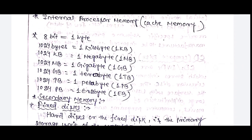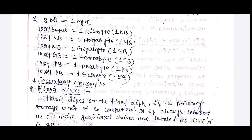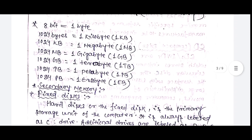8 bit is equal to 1 byte. The memory units go from KB, MB, GB, TB, PB, to EB — that means Kilobyte, Megabyte, Gigabyte, Terabyte, Petabyte, and Exabyte.